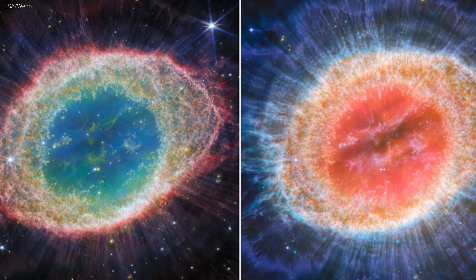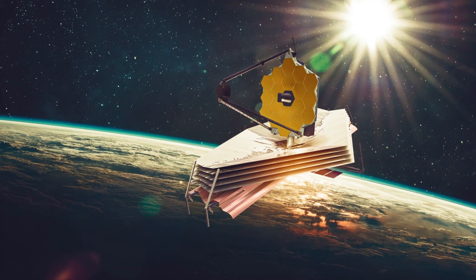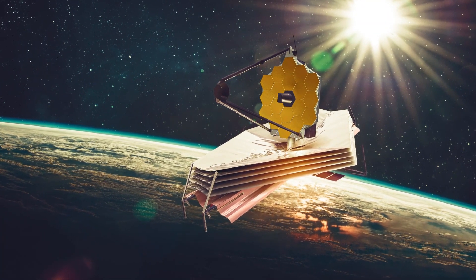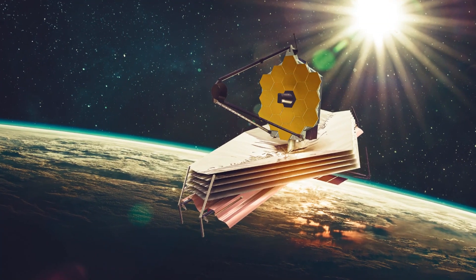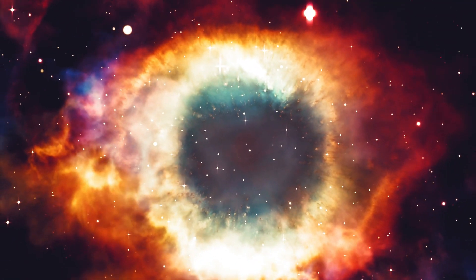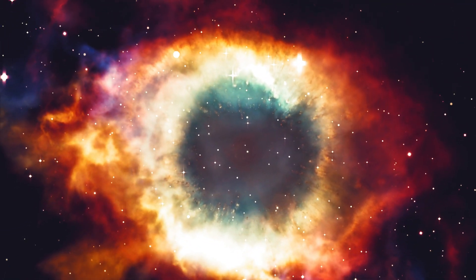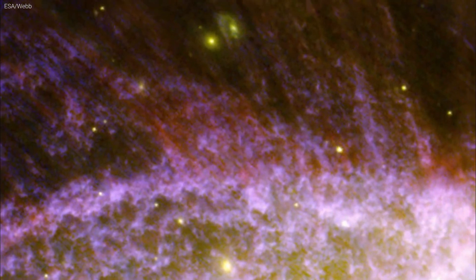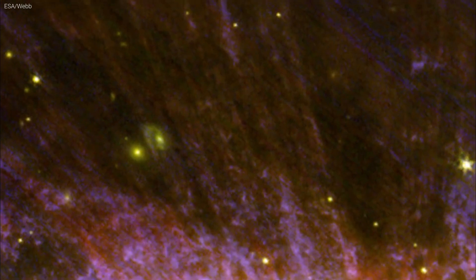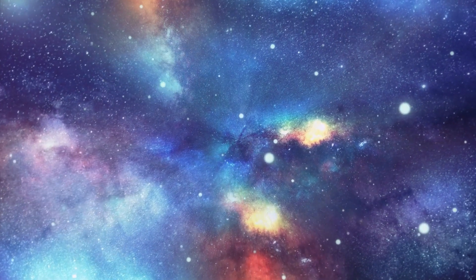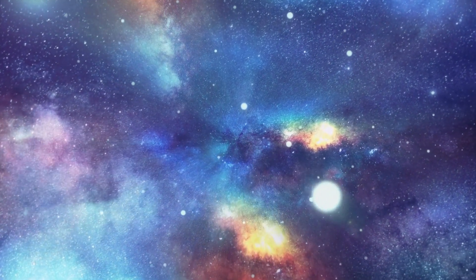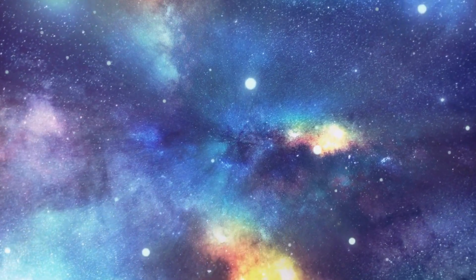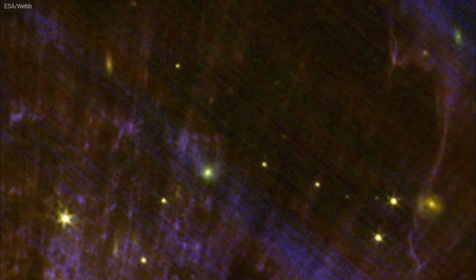What has the JWST truly uncovered in this celestial treasure trove? This revelation is not to be mistaken for the Southern Ring Nebula, as the JWST's lens has captured a distinct celestial marvel. Picture a vantage point akin to peering down the pole of a celestial structure. In reality, this is a 3D scene where the nebula's heart conceals a wealth of lower-density material.